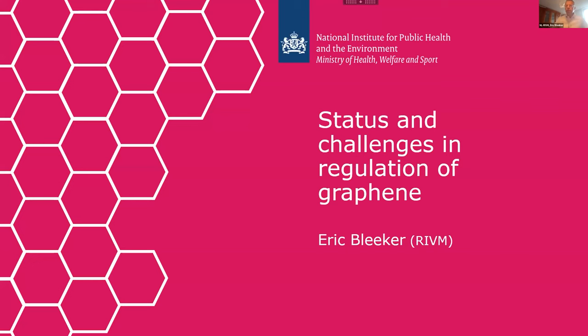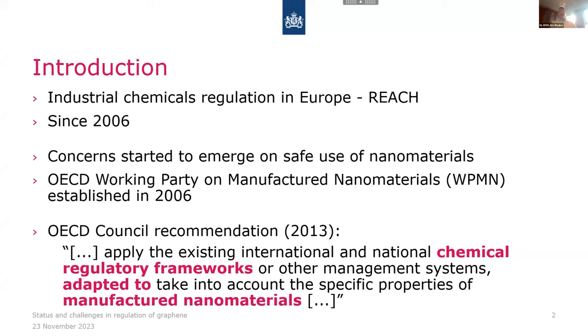Good morning to all, at least in Europe. I was asked to talk about the status and challenges in regulation of graphene. I won't go into all the regulations in detail — I will provide some more general issues. I will focus mainly on REACH, but those issues will also be relevant for other regulations. The REACH regulation is there since 2006, and around the same time concerns started to emerge on the safe use of nano materials. For the OECD, there was a reason to start a working party on manufactured nano materials at that time.